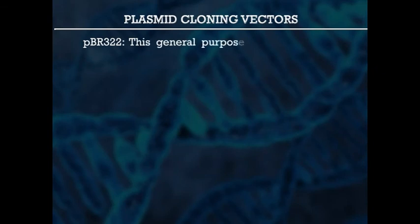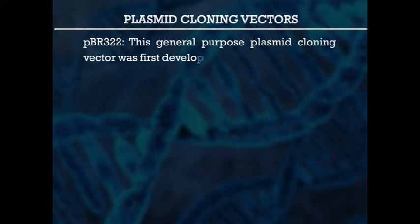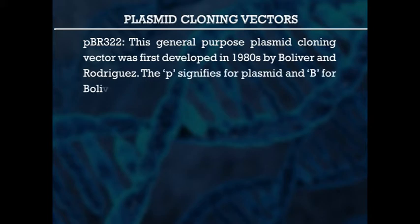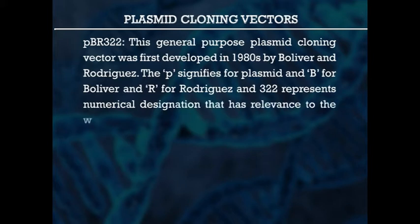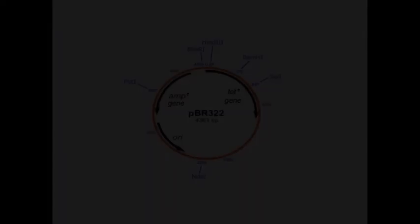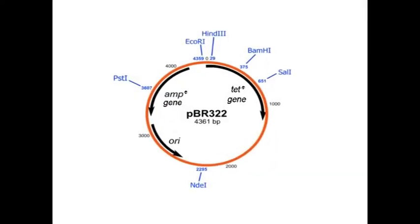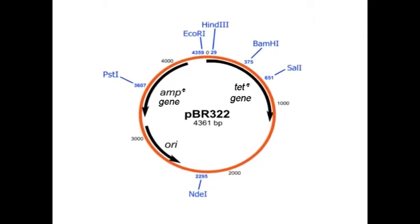The high-quality cloning vector should be small in size — less than 15 kb — should have unique restriction sites for DNA insertion, and should possess one or more selectable markers for identifying the transformed cells containing the cloned gene. Some of the important plasmid vectors include plasmid PBR322. This general-purpose plasmid cloning vector was first developed in the 1980s by Bolivar and Rodriguez. The P signifies plasmid, B for Bolivar, and R for Rodriguez. The number 322 represents a numerical designation relevant to the workers. PBR322 has a size of 4361 base pairs and carries two antibiotic-resistant genes.